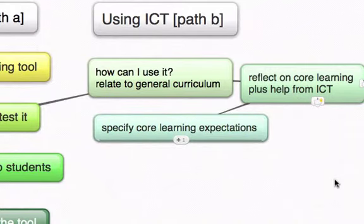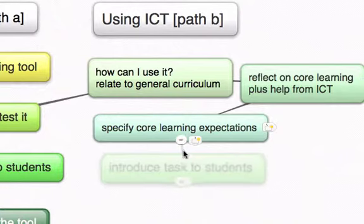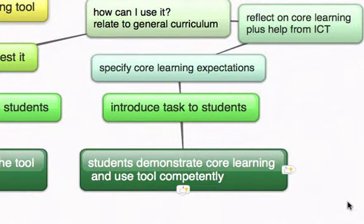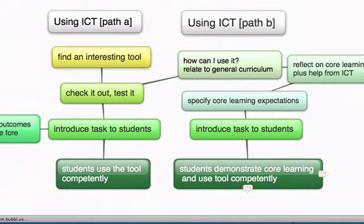It's important for the teacher to specify the core learning expectations when thinking about what students are going to do — what do you expect students to be able to do as a result of going through this process and using this tool? Introduce the task to students, and then the outcomes are likely to be that students demonstrate some core learning and use the tool competently. So Path B is a much more thoughtful, reflective process — a few more steps, but better outcomes.